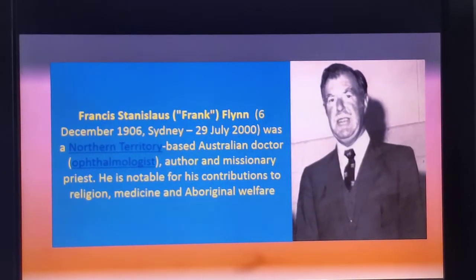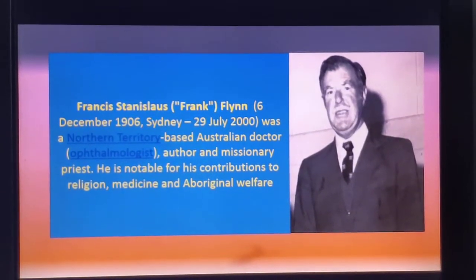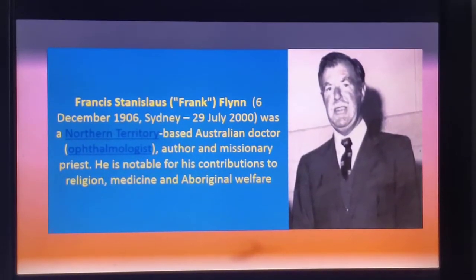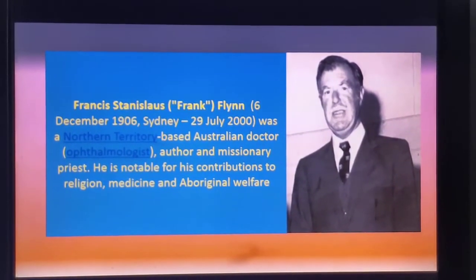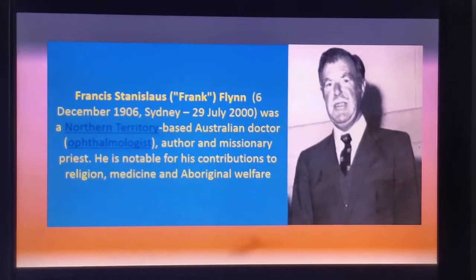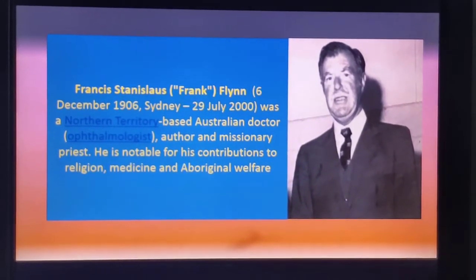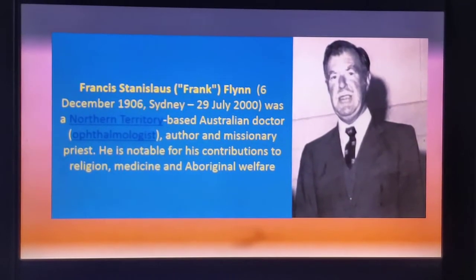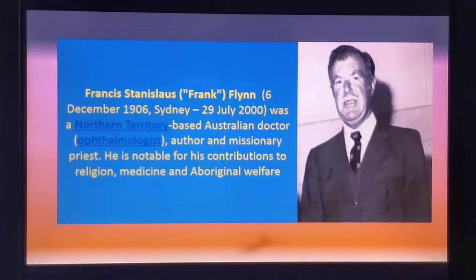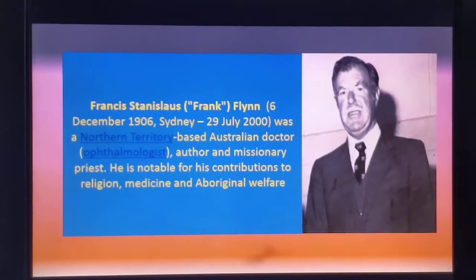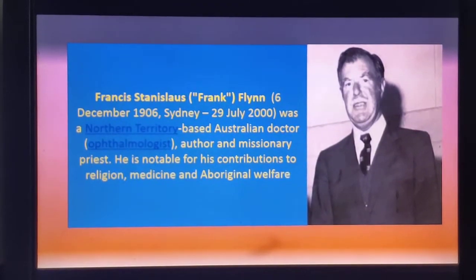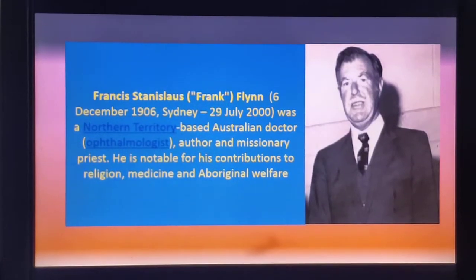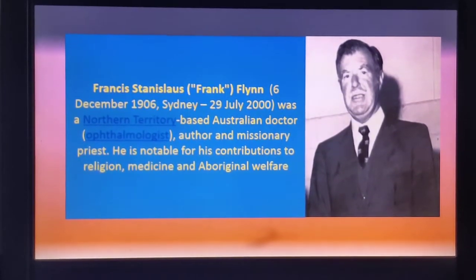Before moving toward the poem, let us see the introduction of the poet Frank Flynn. The full name of Frank Flynn is Francis Tenslas Flynn and he was born on 6th December 1906 in Sydney and he died on 29th July 2000. He was a northern territory based Australian doctor, author and missionary priest, notable for his contributions to religion, medicine and aboriginal welfare.